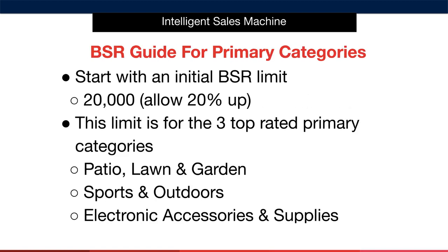Let's calculate our BSR limit for a product that's in a primary category. We start with the number 20,000 — this is our base number. This is the BSR limit for the three top-rated primary categories: Patio, Lawn, and Garden; Sports and Outdoors; and Electronic Accessories and Supplies. These are considered the primary categories on every Amazon marketplace around the world.